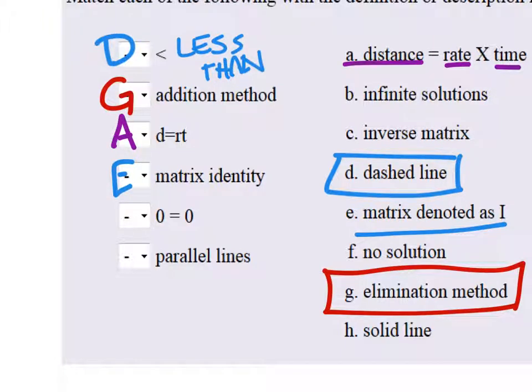If we ever solve and we find that zero equals zero, sometimes we didn't go that far, but if we did, we would find that there would be an infinite number of solutions. That's B.